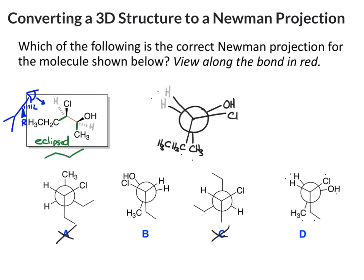Now, you'll notice in this drawing, I skewed the back carbon around instead of skewing the front. It doesn't matter. It's still the ethyl and the methyl were eclipsed. The chlorine and OH are eclipsed. The hydrogens are eclipsed. So these are identical.